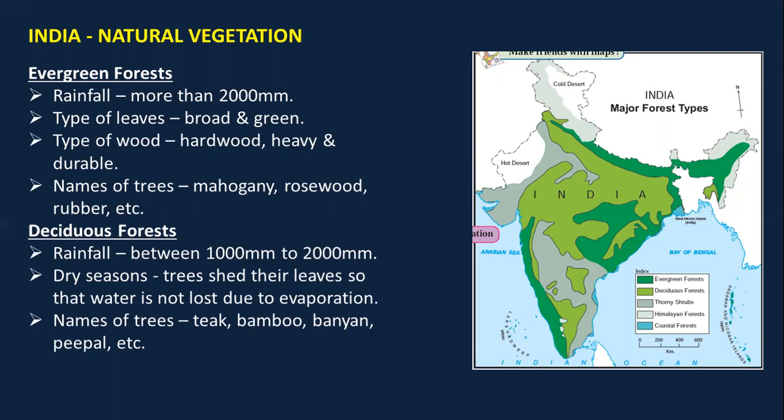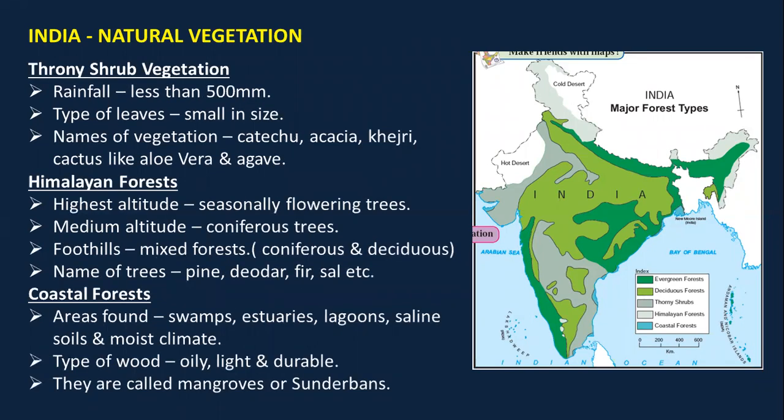One more important point: you can also mention the region where evergreen forest is found. You can write that it is present in the Western Ghats of Maharashtra, or in the northeast in the Assam region where there is heavy rainfall. Mentioning the region will earn you an extra point.